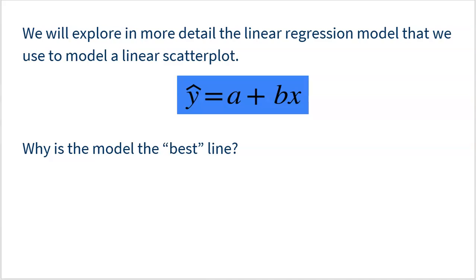If you have a scatter plot analyzing the relationship between two quantitative variables, and you see a pretty strong linear relationship, you might consider putting a line through the data — that would be a model used to make predictions. We call this the linear regression model: y-hat equals a plus bx, where a is the y-intercept and b is the slope. The hat on the y is important because this line is simply used to make predictions, not to tell you what's actually going to happen.